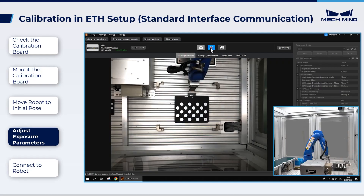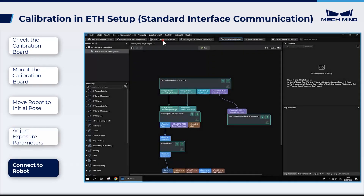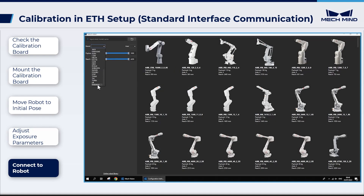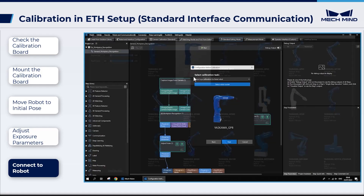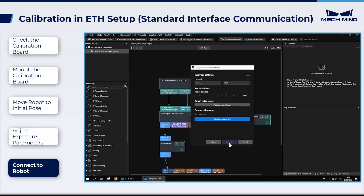Click Capture Live and move the calibration board to the center of the camera's field of view. Click Camera Calibration and select the robot's model, Yaskawa GP8. Select Camera Setup: Eye to Hand. Set Calibration Method and Robot Control to Automatic and Standard Interface. Finally, click Connect the Robot.